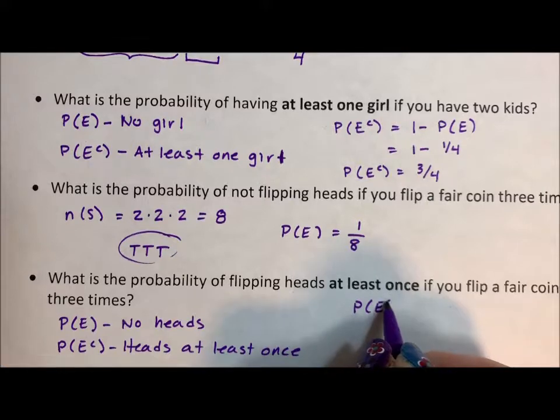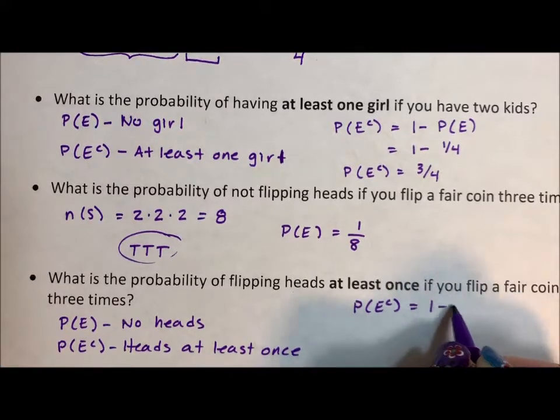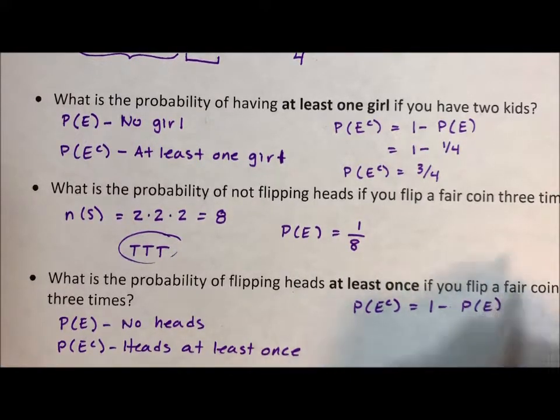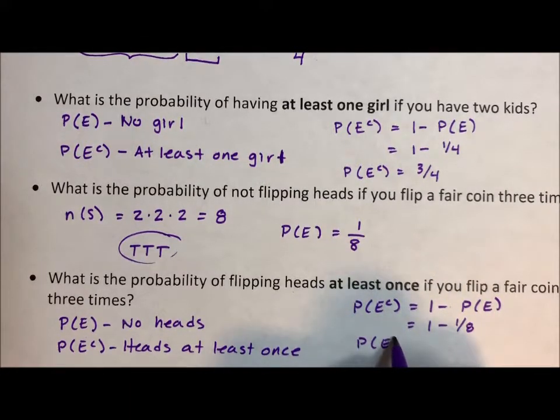So P(E complement) equals one minus P(E). So it's going to be one minus one-eighth. So P(E complement), heads at least once, is seven-eighths. And we didn't have to write out our whole sample space this time.